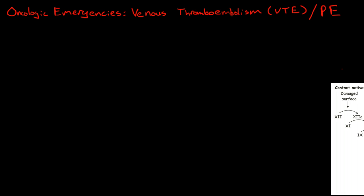Why is this an oncologic emergency? Venous thromboemboli can lead to pulmonary emboli, which can be a life-threatening condition. Interestingly, the incidence of venous thromboembolism in cancer patients has been reported in the literature at about 11 to 15 percent. But some studies show on autopsy that up to 50 percent of cancer patients have been found to have a DVT or PE. So DVT and PE are very common conditions in cancer patients.